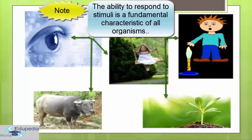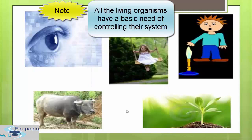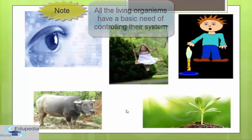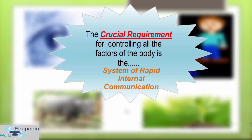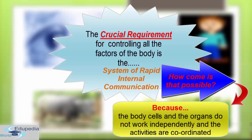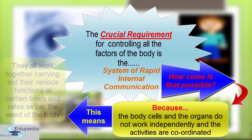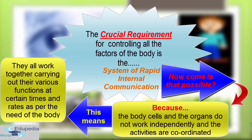Each kind of change in environment evokes an appropriate movement in response. The ability to respond to stimuli is a fundamental characteristic of all organisms. All living organisms have a basic need to control their system. One of the most important requirements for controlling all the factors of the body is a system of rapid internal communication. The cells and organs of the body do not work independently. Their activities are coordinated, working together at certain times and rates according to the need of the body.